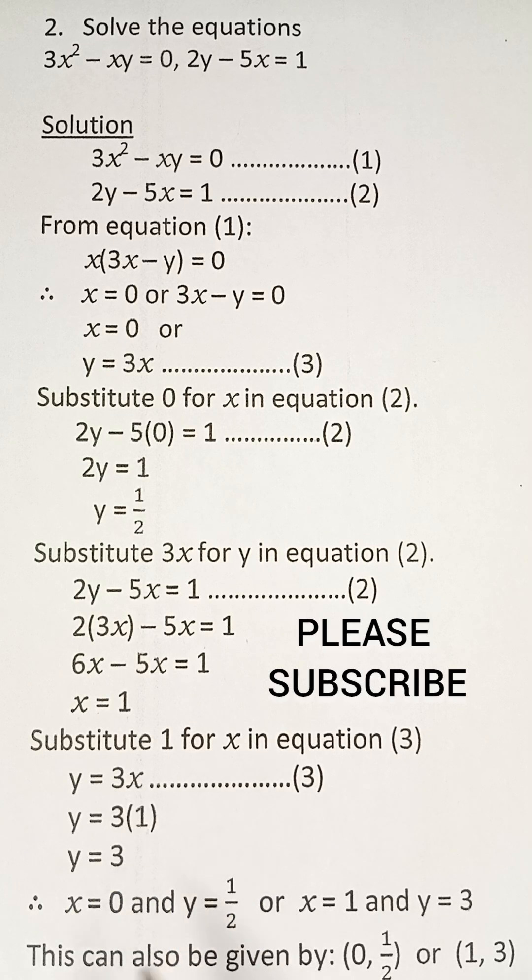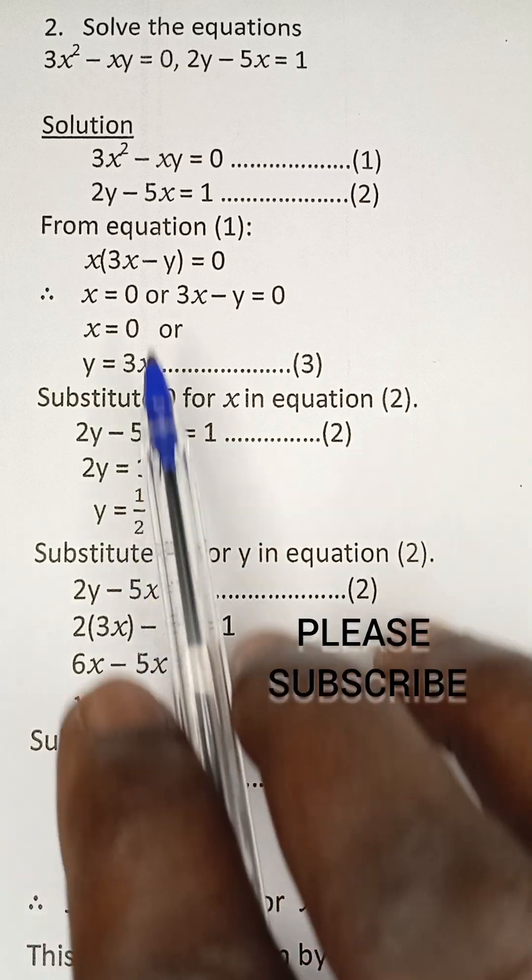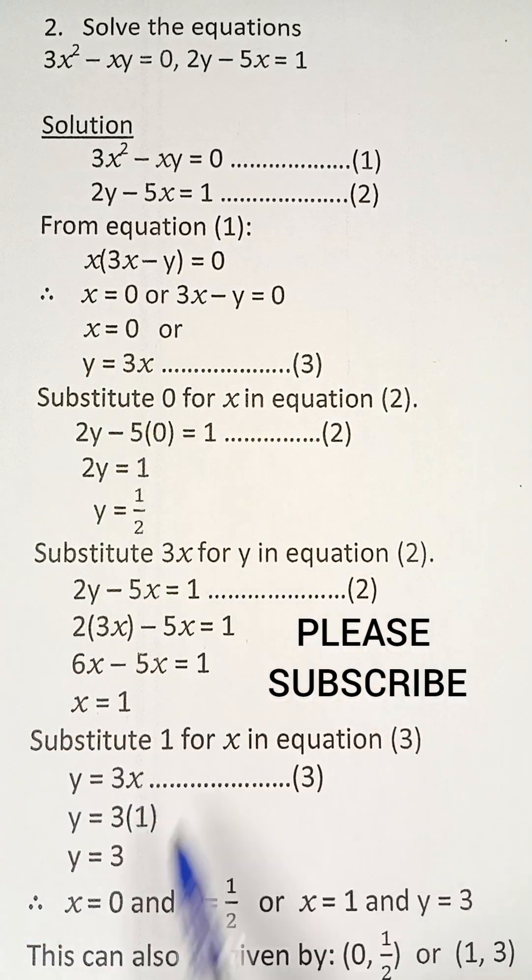We now have these sets of values from what we have solved so far. When x is 0, y is 1/2, as obtained in the first set of substitution. Or, when x is 1, y is 3, as obtained in this second part.